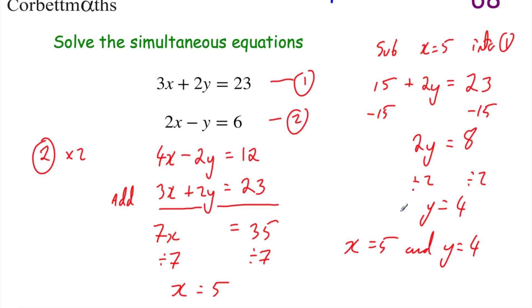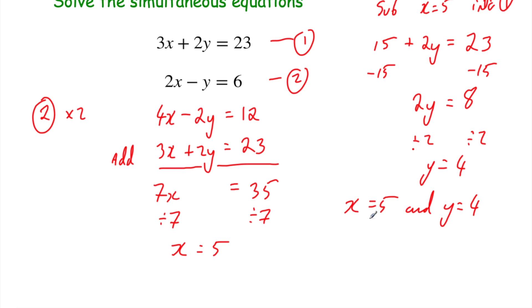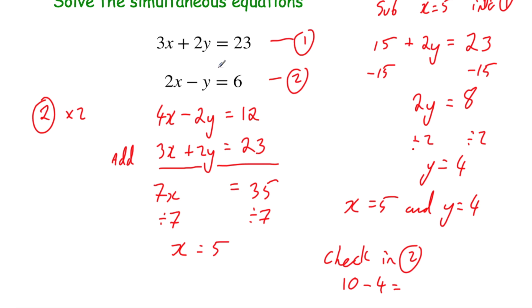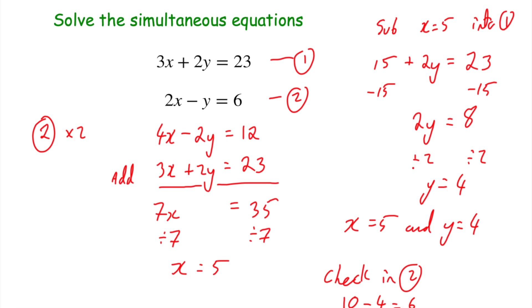Whenever I'm doing simultaneous equations, I like to check my answer to make sure I'm definitely right. We haven't used equation 2 to substitute anything into yet. So substituting x = 5 and y = 4 into equation 2: 2 times 5 is 10, minus 4 equals 6. That should equal 6 — so 6 = 6, and we know we're right. We've solved the simultaneous equations: x = 5 and y = 4.